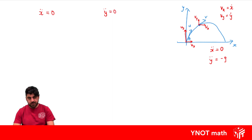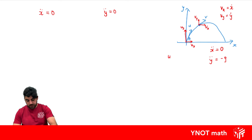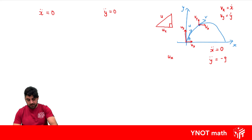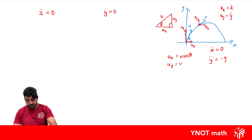Before we integrate, let's get expressions for the initial velocity in the x and y directions. We can imagine a right-angle triangle with u as the hypotenuse, launched at an angle of theta. Using that right-angle triangle, we get the initial velocity in the x direction as u cos theta, and the velocity in the y direction as u sin theta.